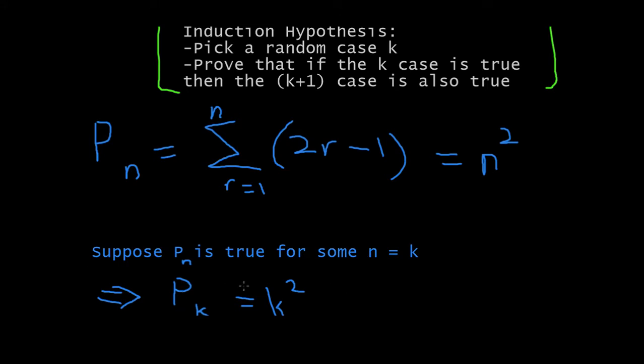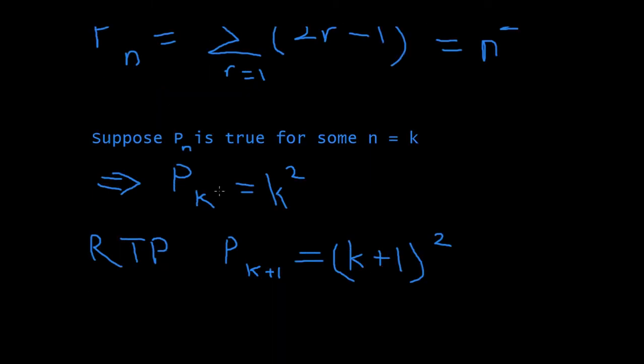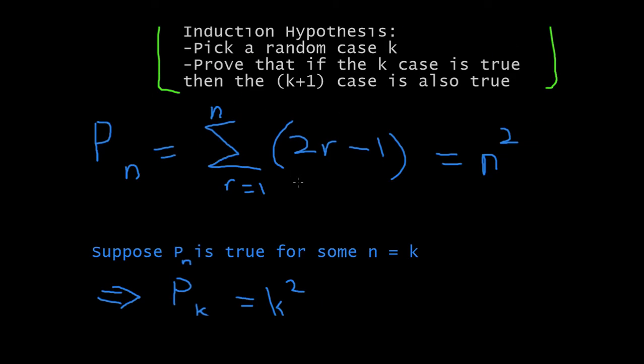Then we say, suppose Pn is true for some value of n is equal to K. So, we're saying, somewhere on the number line, n will be equal to K. Somewhere along the line, the random value of n will be equal to the random value of K. So, if we rewrite it as Pk is equal to K squared, this is true. From here, we just change the n to K.